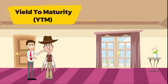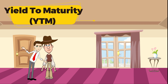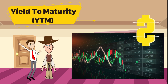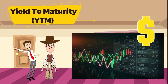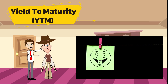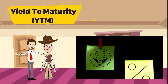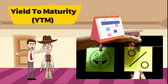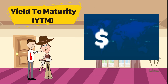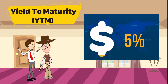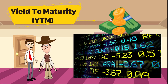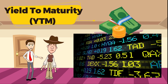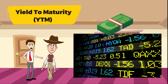Yield to maturity, or YTM, is the average return of the bond over its remaining lifetime. It takes into consideration the total expected returns on a bond if it's held until its maturity date. This includes all coupon payments, as well as the difference between the bond's purchase price and its face value at maturity.